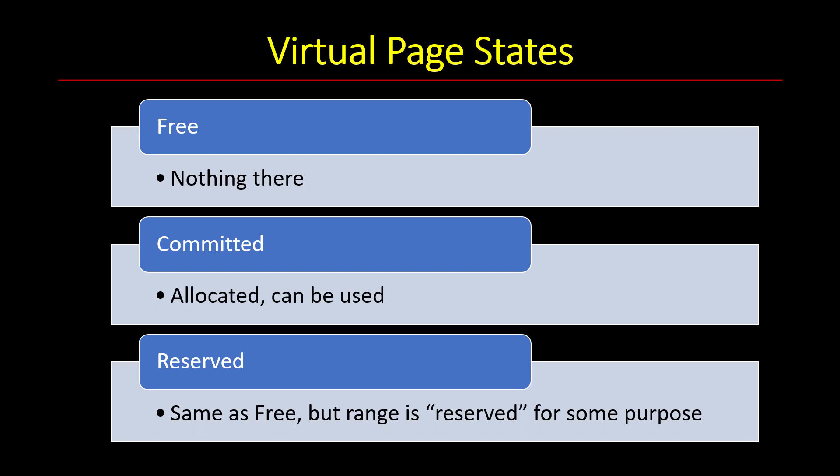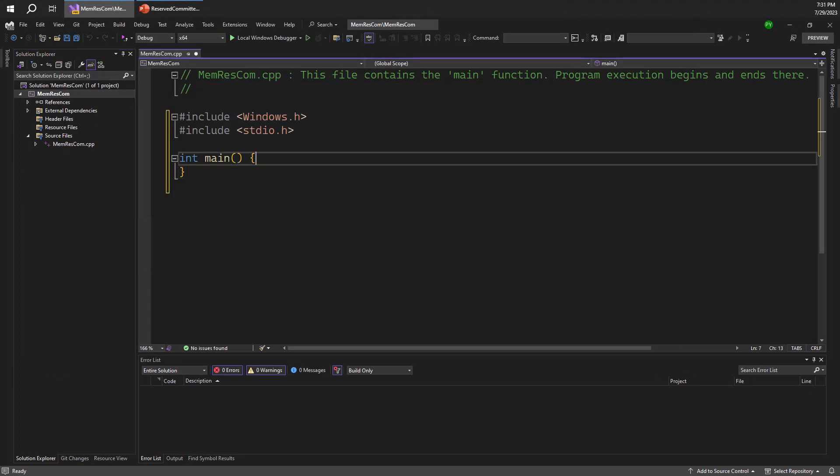A reserved region is a contiguous address space set aside for a particular purpose. To use any of it, you must explicitly use addresses within that range. A classic example is a thread stack. When a thread is created, you might want a maximum stack of one megabyte. Rather than allocating all of that up front — which could be wasteful — you have an initial committed size that grows gradually up to the reserved limit.